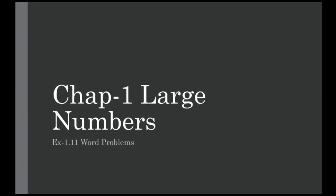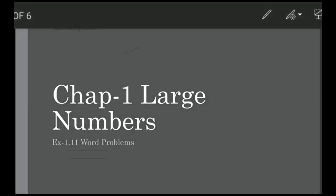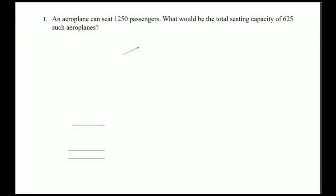Good morning students. Today we are going to solve exercise 1.11 of chapter number 1, Large Numbers. Let's start with sum number one: an aeroplane can seat 1250 passengers. What would be the total sitting capacity of 625 such aeroplanes?